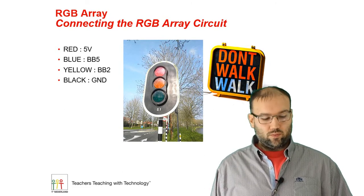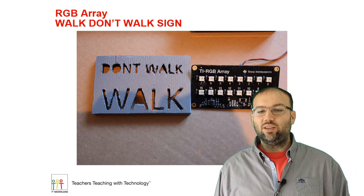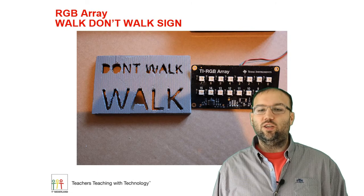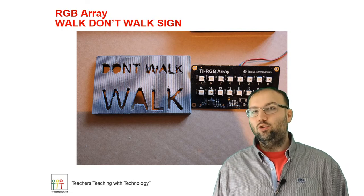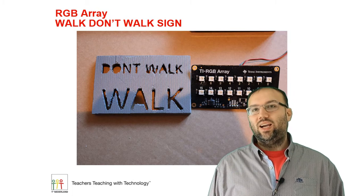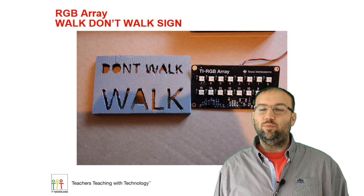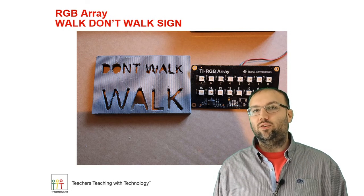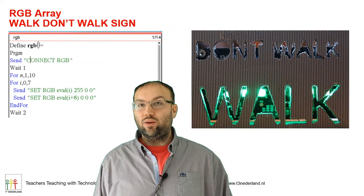Let's start with the walk/don't walk light. I've made a 3D printed cover for the RGB array for that. It's quite simple — you want to have a red light strip at the don't walk and a green light strip at the walk. That's why it's nice that there are two rows of RGB LEDs with the RGB array, so the first row needs to be red and the second row needs to be green.